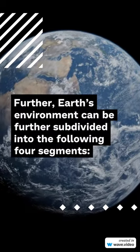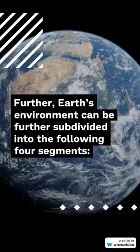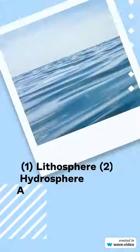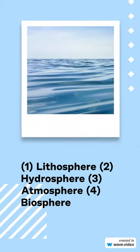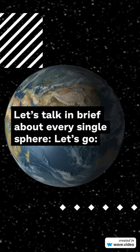Further, Earth's environment can be subdivided into the following four segments: one, lithosphere; two, hydrosphere; three, atmosphere; and four, biosphere. Let's talk briefly about every single sphere. Let's go!